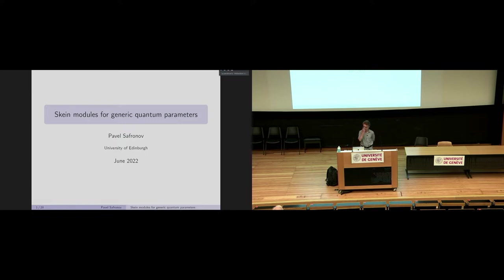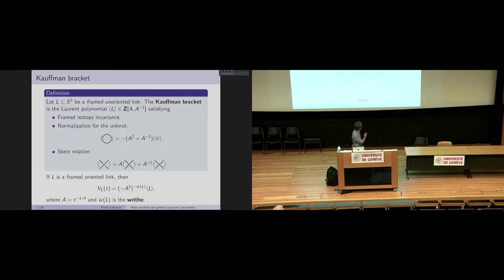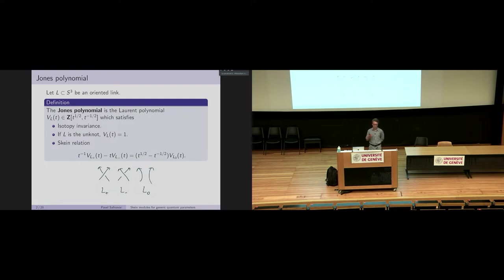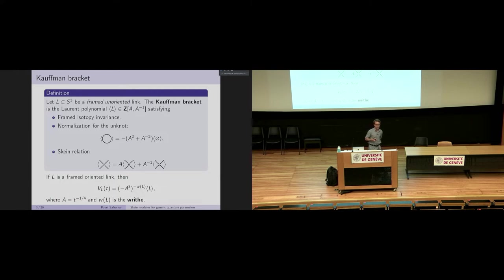Let me begin with the story of the Jones polynomial, which we have already seen several times today. The Jones polynomial is some Laurent polynomial in square root of t, and is determined by its normalization on the unknot and the skein relation. So what happens if you have two different kinds of crossings, you can resolve them. The skein relation for the Jones polynomial doesn't allow you to reduce the number of crossings. And that's why Kauffman came up with a slightly different version of the Jones polynomial, the Kauffman bracket.